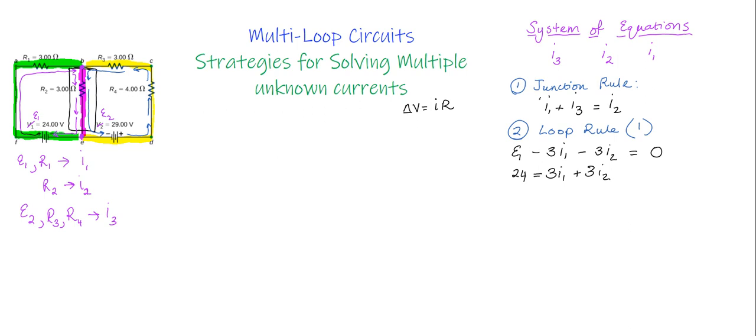Okay, so so far for my system of equations, I have this equation over here. I have this second equation over here, and now I'm going to do my third equation. The third equation, I'm going to use the loop rule again, but I can't use the same loop obviously because then I would get the same equation. So I'm going to use a different loop, and you have options. You could either use this right hand loop or you could use the outer loop, and either of those should work.